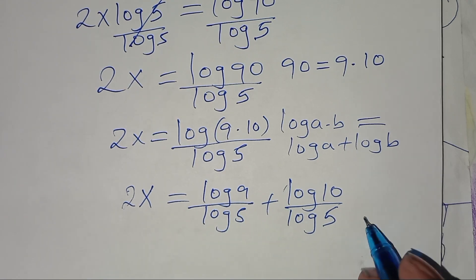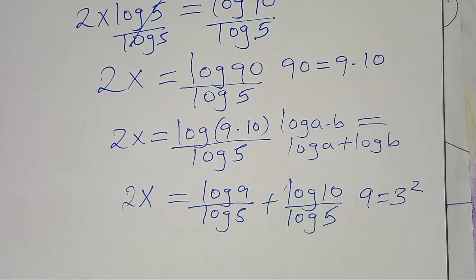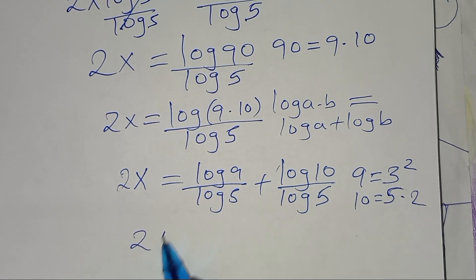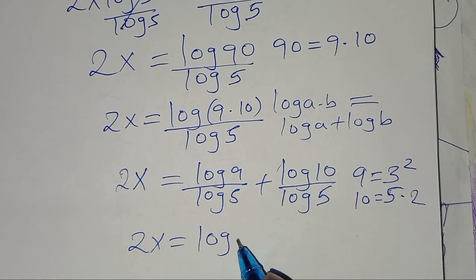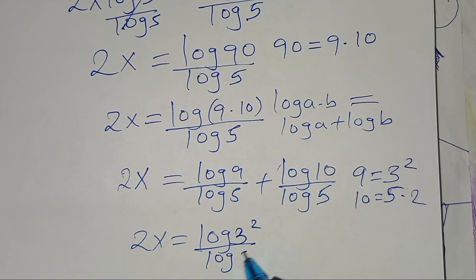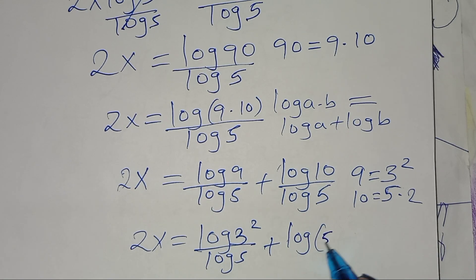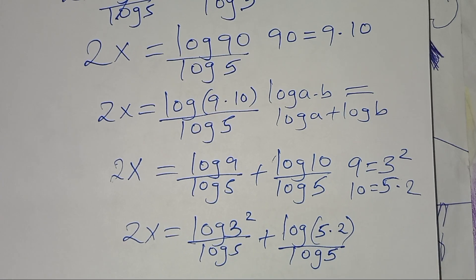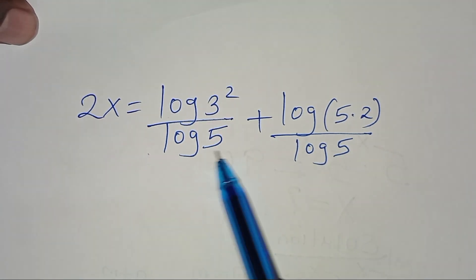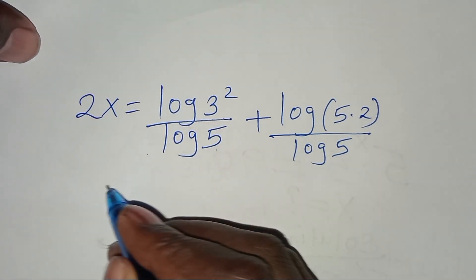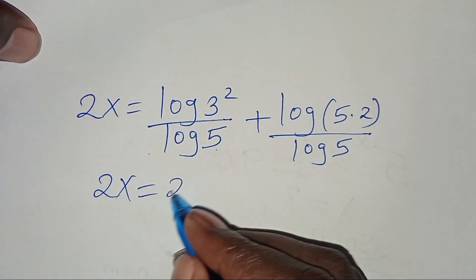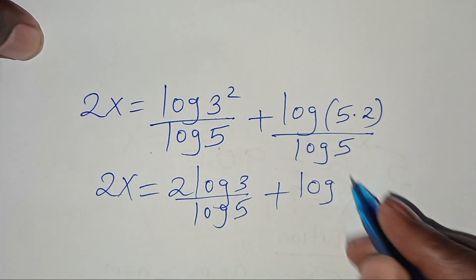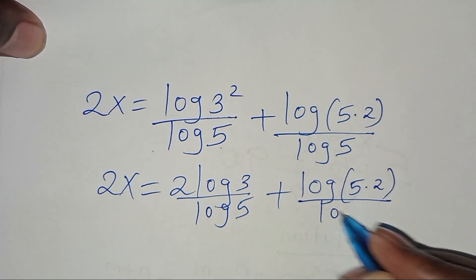Now from here, we can express 9 as 3 to the power 2, and we can express 10 as 5 multiplied by 2. Therefore, we have 2x equal to log of 3 squared divided by log 5 plus log of 5 times 2 divided by log 5. Applying the power rule, log 3 squared becomes 2 log 3 divided by log 5, plus log of 5 times 2 divided by log 5.